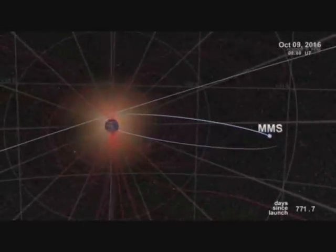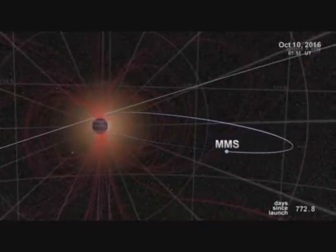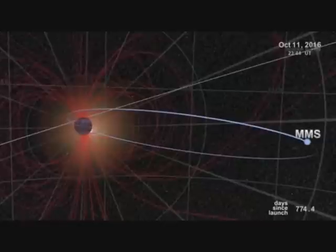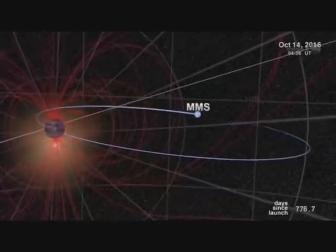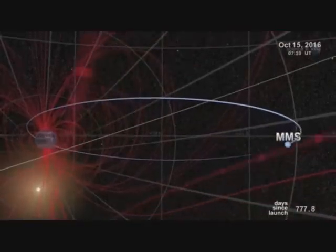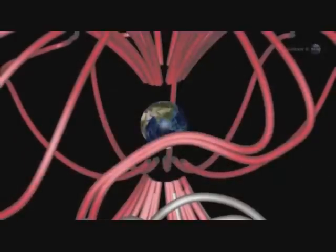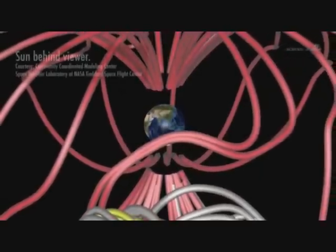Just one problem. Finding them. Magnetic portals are invisible, unstable, and elusive. They open and close without warning. And there are no signposts to guide us in, notes Scudder. Actually, there are signposts, and Scudder has found them.